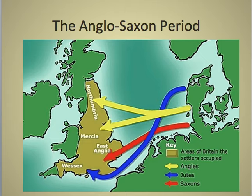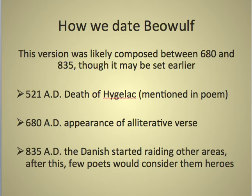Here's another map that shows the placement of where these people were. The Angles were up north, the Jutes were to the south, and the Saxons were in the middle. One of the historical issues that comes up is that we have a lot of different tribes, a lot of different people, all in close quarters — and as we know with history, that doesn't always work out very well. So there's a lot of war, invasions, and conflict.